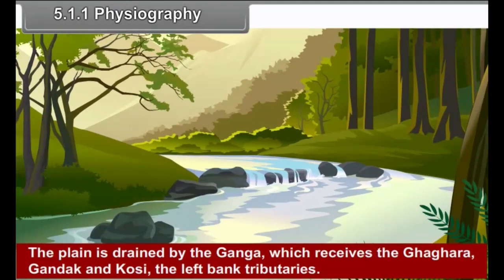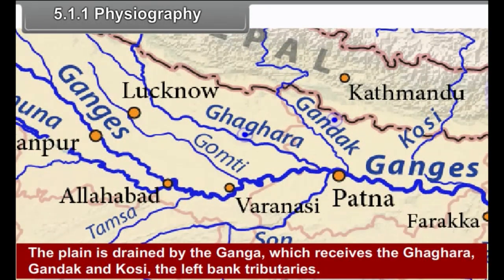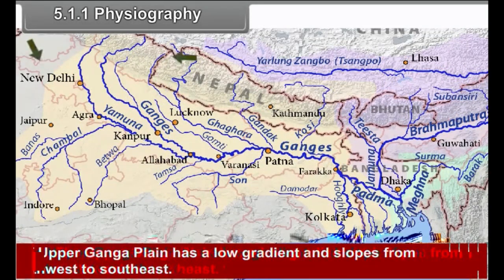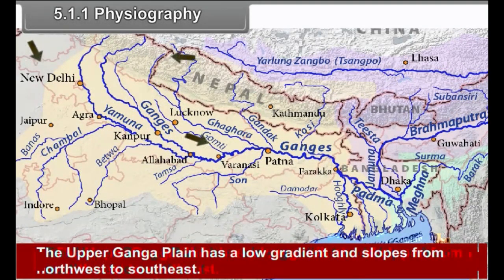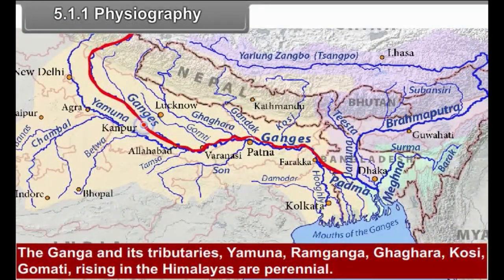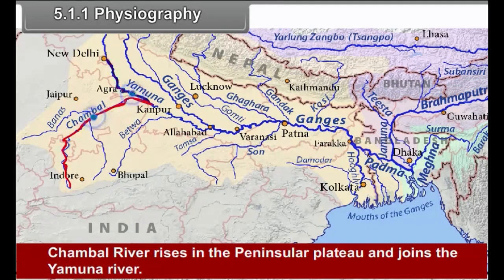The plain is drained by the Ganga, which receives the Ghagra, Gandak and Kosi as left bank tributaries. The upper Ganga Plain has a low gradient and slopes from north-west to south-west. The Ganga and its tributaries — Yamuna, Ram Ganga, Ghagra, Kosi and Gomti — rising in the Himalayas are perennial. The Chambal River rises in the Peninsular Plateau and joins the Yamuna River.